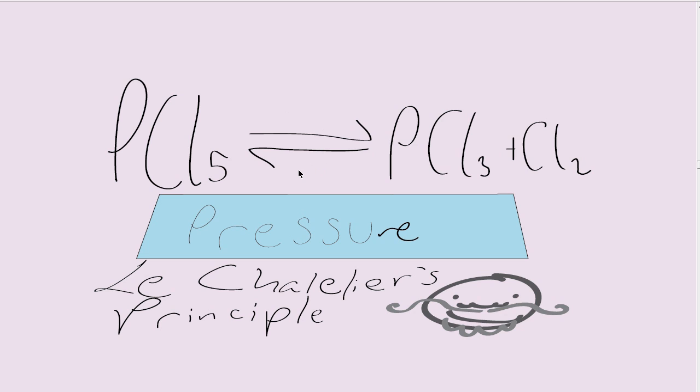If the pressure is increased, it'll go to the side, it'll go back to PCl5, because it has fewer gas molecules on this side. However, if the pressure is decreased, then it'll go to the other side where there are more gas molecules.